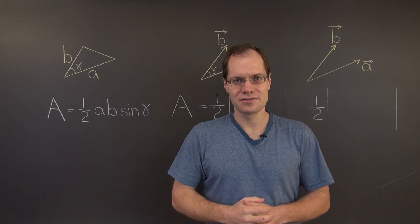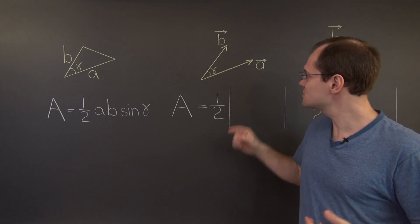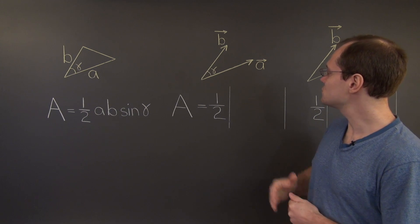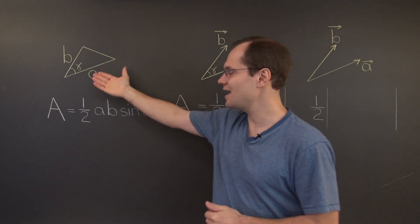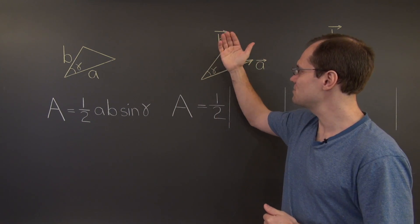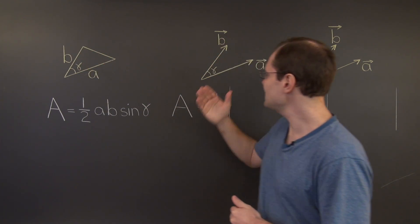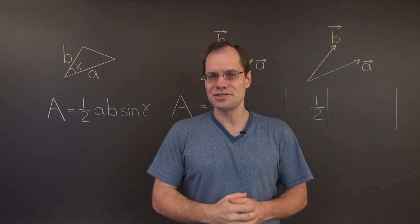The lengths of these vectors are denoted by the same letters without the little arrow. So the length of the vector A is A, and the length of the vector B is B. And gamma is still the angle between them.